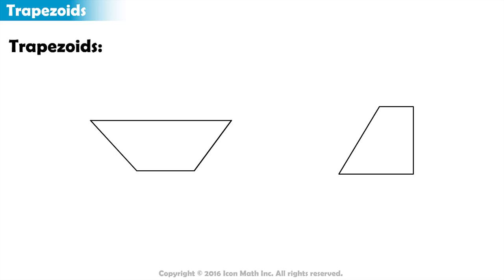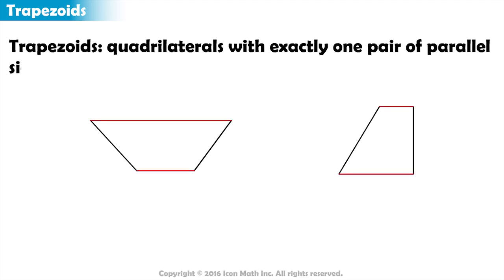One type of quadrilateral that has exactly one pair of parallel sides is a trapezoid. A trapezoid is a special type of quadrilateral with one pair of parallel sides.